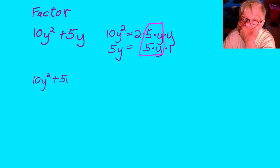So, 10y squared plus 5y is going to equal 2 times 5 times y times y plus 1 times 5 times y. And there's a reason I put the 1 in there.